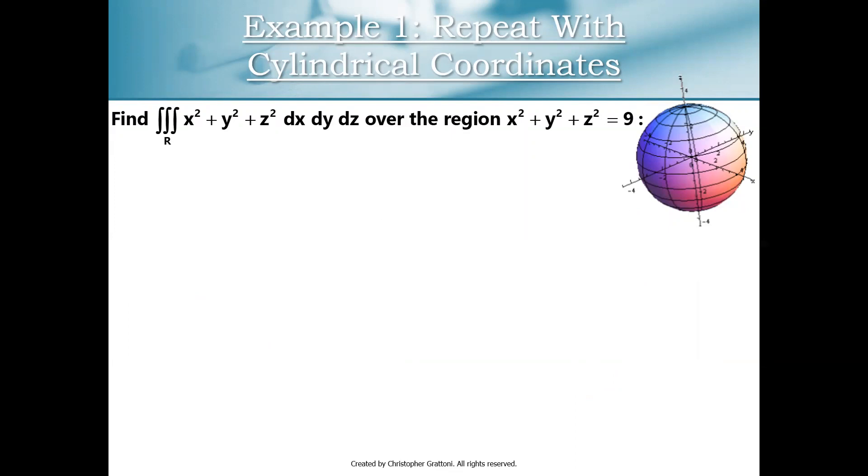So this is going to be a connection here with the previous videos, because I'm going to repeat a problem that we did in the first video, now using cylindrical coordinates. So we have the triple integral of x squared plus y squared plus z squared dx dy dz over this region, x squared plus y squared plus z squared is less than or equal to 9, or the interior of a sphere of radius 3.